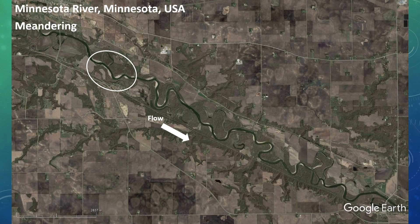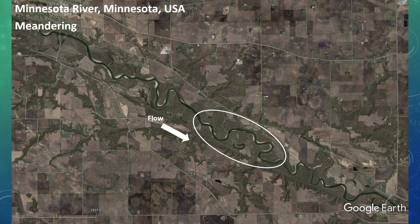If you guessed meandering channel, great work! Did you notice the sequence of point bars like those circled here? What about the high curvature throughout this reach? While there's evidence of other channels, these are old abandoned channels that don't typically see much flow and are gradually filling in with sediment, unlike the anastomosing river, which still experiences flow through all branches of the channel.